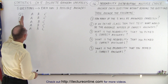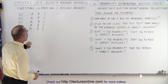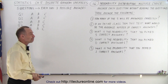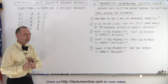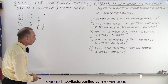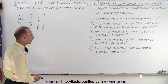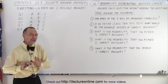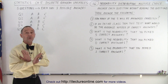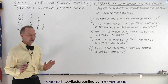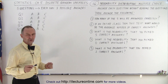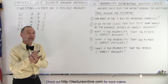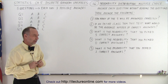Each of the five questions has three possible answers: A, B, or C. Only one of those three answers can be correct. You've been asked to take the test without reading the questions, which means you have to randomly pick an answer for each of the questions.